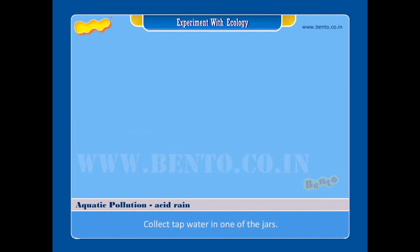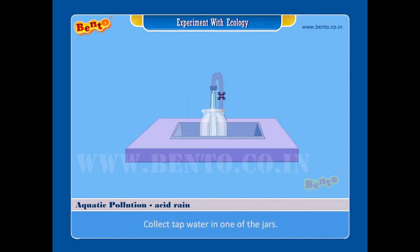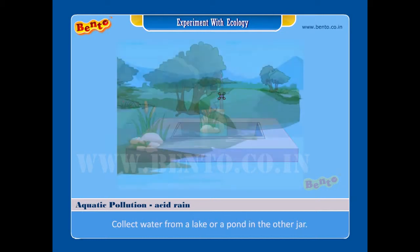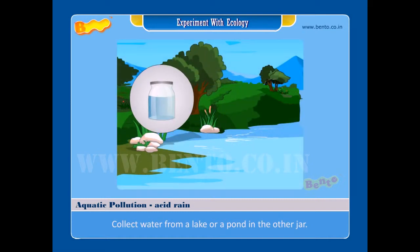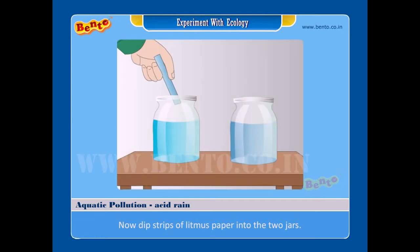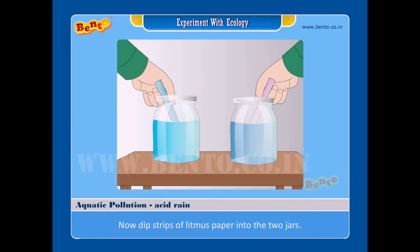Procedure. Step one: collect tap water in one of the jars. Step two: collect water from a lake or a pond in the other jar. Step three: dip strips of litmus paper into the two jars.